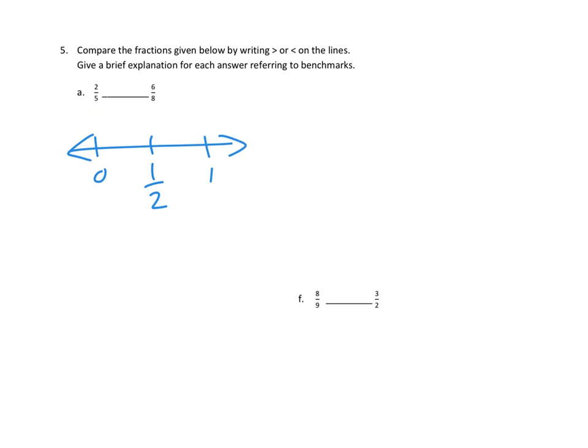2 fifths. Fifths would be 1, 2, 3, 4, 5. 2 would be somewhere over here, right? 2 fifths. How about 6 eighths? If we divided this up into 8 pieces, let's see. That would be like 1, 2, 3, 4, 5, 6, 7, 8. 6 eighths would be somewhere over here, right? That would be 6 eighths.